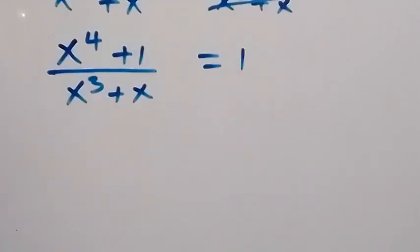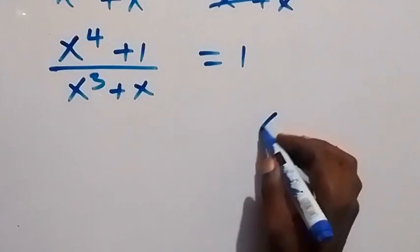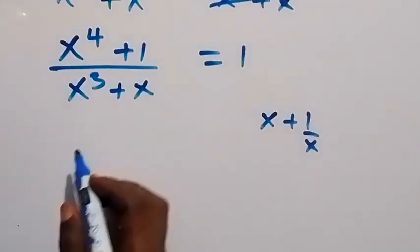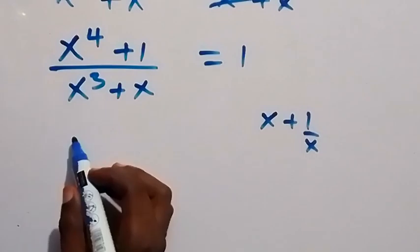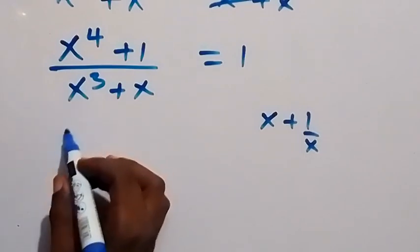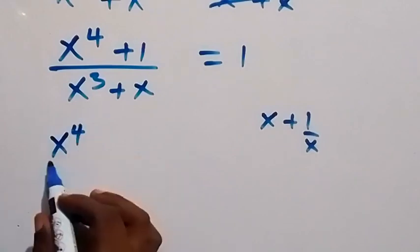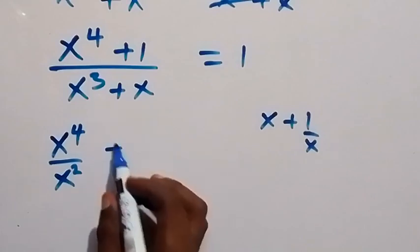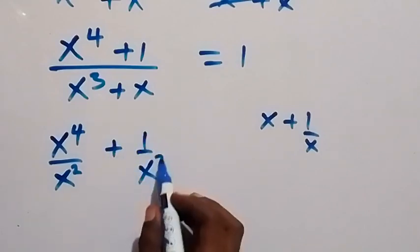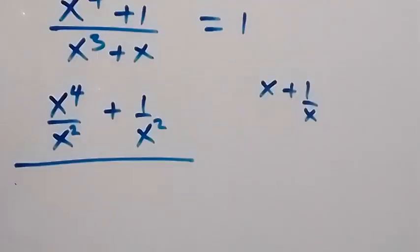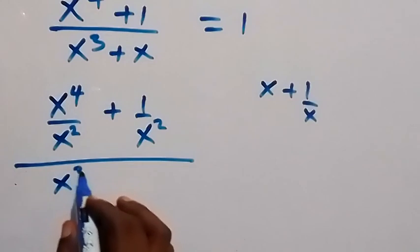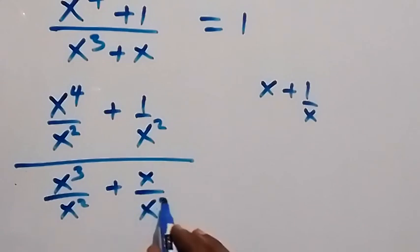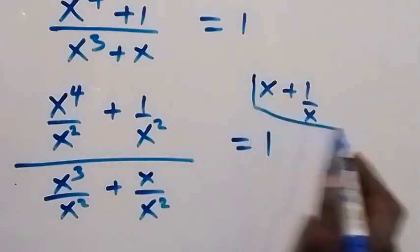In the next step, let's make x plus 1 over x common on the left-hand side. We divide both numerator and denominator by x squared. In the numerator we have x raised to power 4 over x squared, plus 1 over x squared. In the denominator we have x cubed divided by x squared, plus x divided by x squared, which is equal to 1.